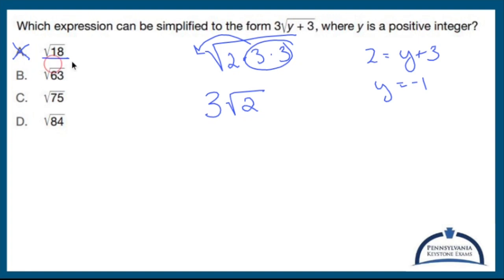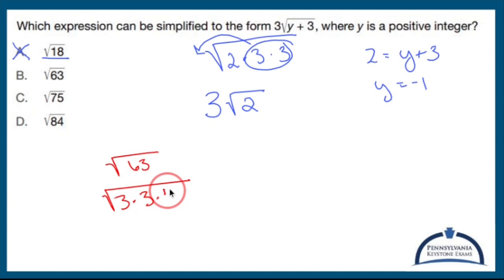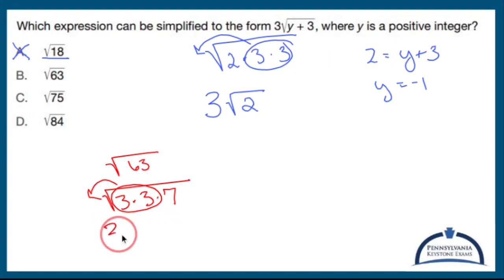So I take each one of these, do what I'm supposed to do, and make it look like that target form. Let's take the square root of 63 and see what I get. The square root of 63 can be written as 9 times 7, or 3 times 3 times 7. I can pull out a set of 3s, which gives me 3 times the square root of 7.